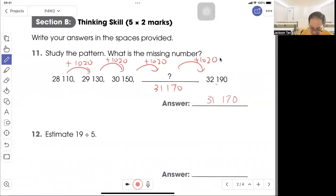Question 12: Estimate 19 divided by 5. When they say estimate, you find a number closer that can be divided by 5. So multiples of 5: 5, 10, 15, 20. The closest number to 19 is 20. So 20 divided by 5 gives you the answer 4.